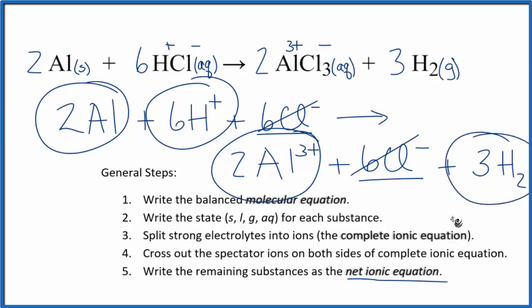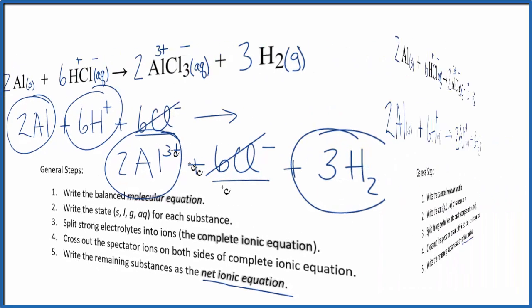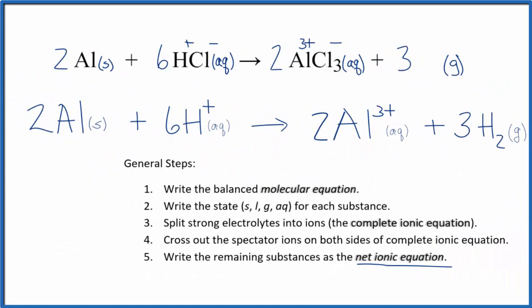That gives us the net ionic equation: 2 Al plus 6 H⁺ ions yields 2 Al³⁺ ions plus 3 H₂. Let me clean this up and write the states in, and this is the nicely written net ionic equation for Al plus HCl — aluminum plus hydrochloric acid. This is Dr. B — thanks for watching.